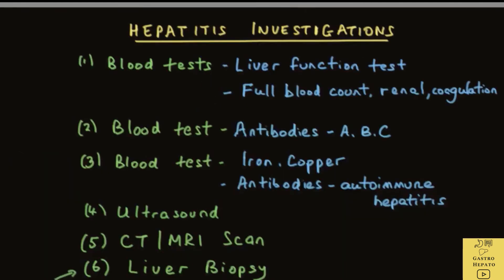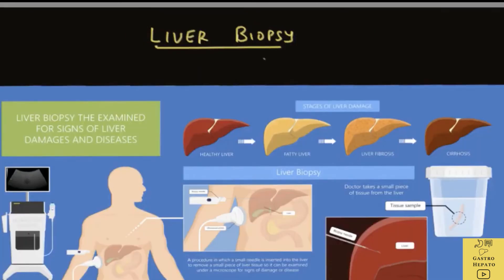Finally, liver biopsy is the only definitive investigation to detect liver inflammation and scarring. It is used when the doctor is unable to reach a conclusive diagnosis after the above investigations. In a liver biopsy, the doctor takes a small piece of tissue from the liver. However, it is an invasive procedure and occasionally the patient may bleed from the biopsy site. To reduce the risk of bleeding and to ensure the needle is in the right spot, most liver biopsies today are done under ultrasound guidance.